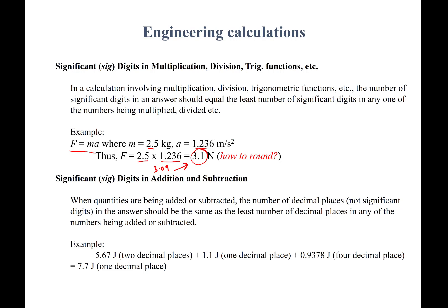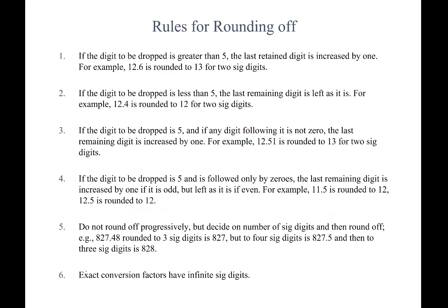For addition and subtraction, the rule is slightly different. Instead of counting total significant figures, you look at the least number of decimal places among the input quantities. For example, adding 5.67 J + 1.1 J + 0.9378 J: the fewest decimal places is one (from 1.1 J), so the final answer can have no more than one decimal place. Adding them gives several digits after the decimal, but you round to one decimal place, giving 7.7 joules.